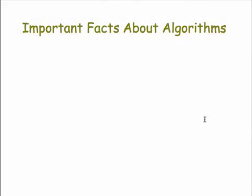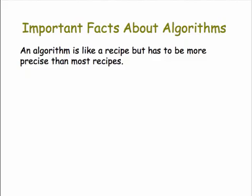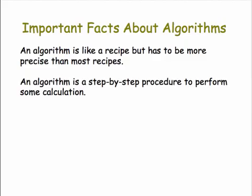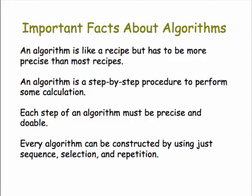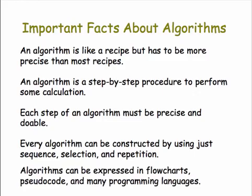To sum up, let's review some of the important facts we've discovered about algorithms. First, an algorithm is like a recipe, but has to be much more precise than most recipes. An algorithm is a step-by-step procedure to perform some calculation, each step of which must be precise and doable. And every algorithm can be constructed by using just sequence, selection, and repetition. And finally, algorithms can be expressed in flowcharts, pseudocode, and in many programming languages, including, of course, App Inventor.